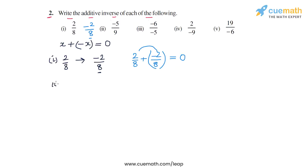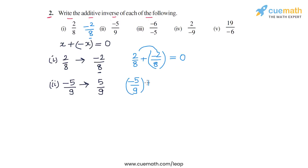In the second part, the rational number is minus 5 by 9. We take the negative by inverting the sign of the numerator, which gives us 5 by 9. So 5 by 9 is the additive inverse of minus 5 by 9. We can check: if we take minus 5 by 9 and add 5 by 9 to it, the numerators minus 5 and 5 add to 0, and we get 0.